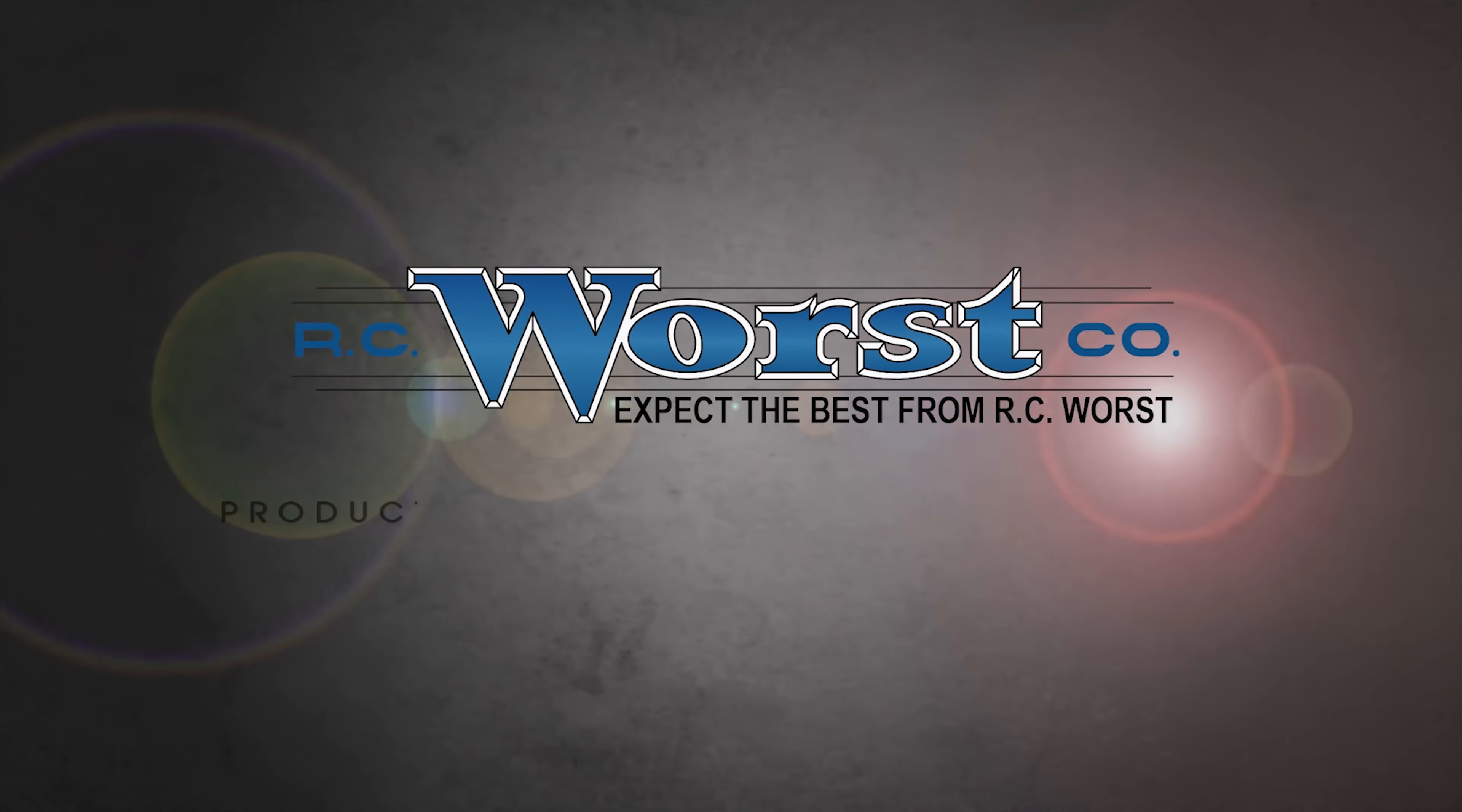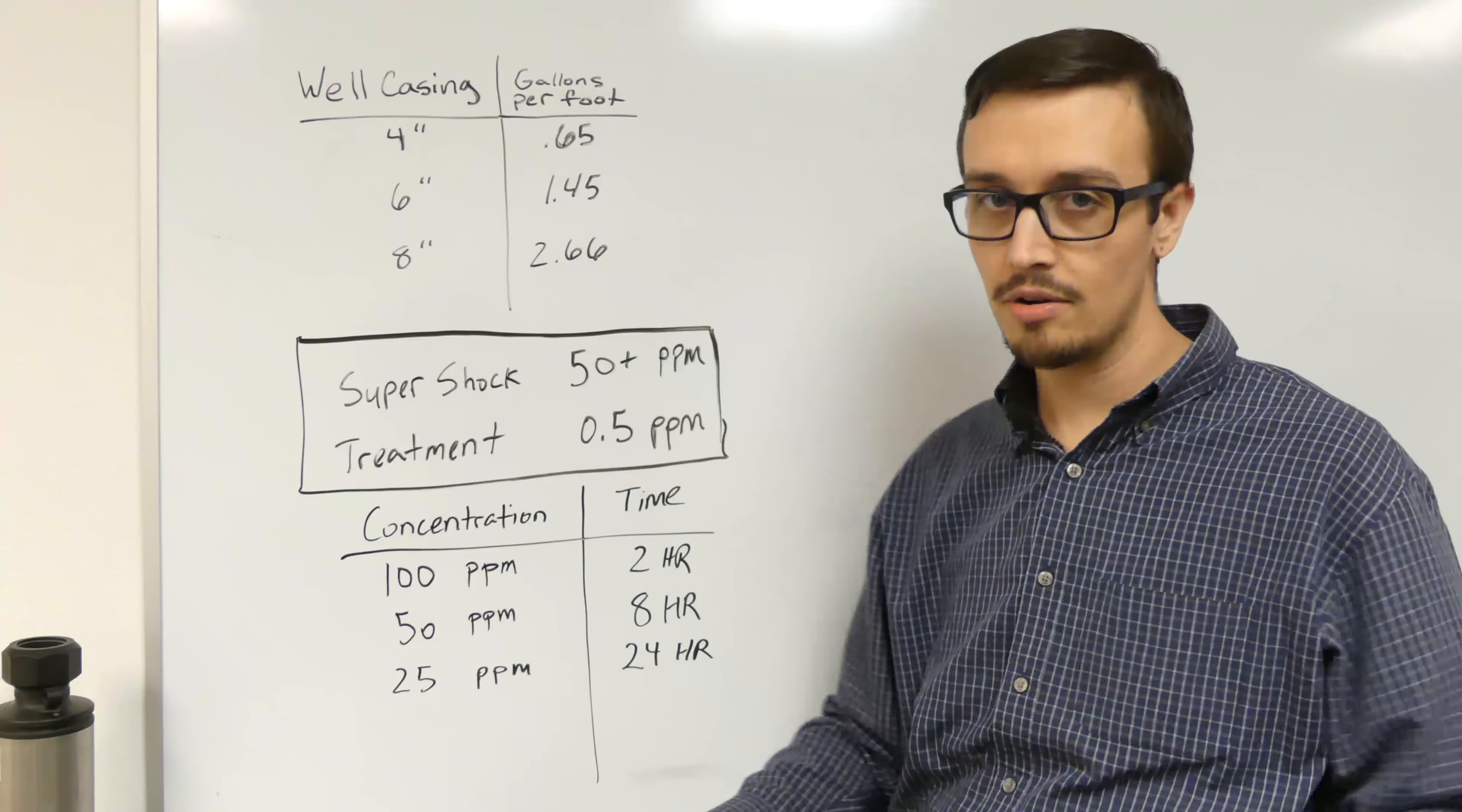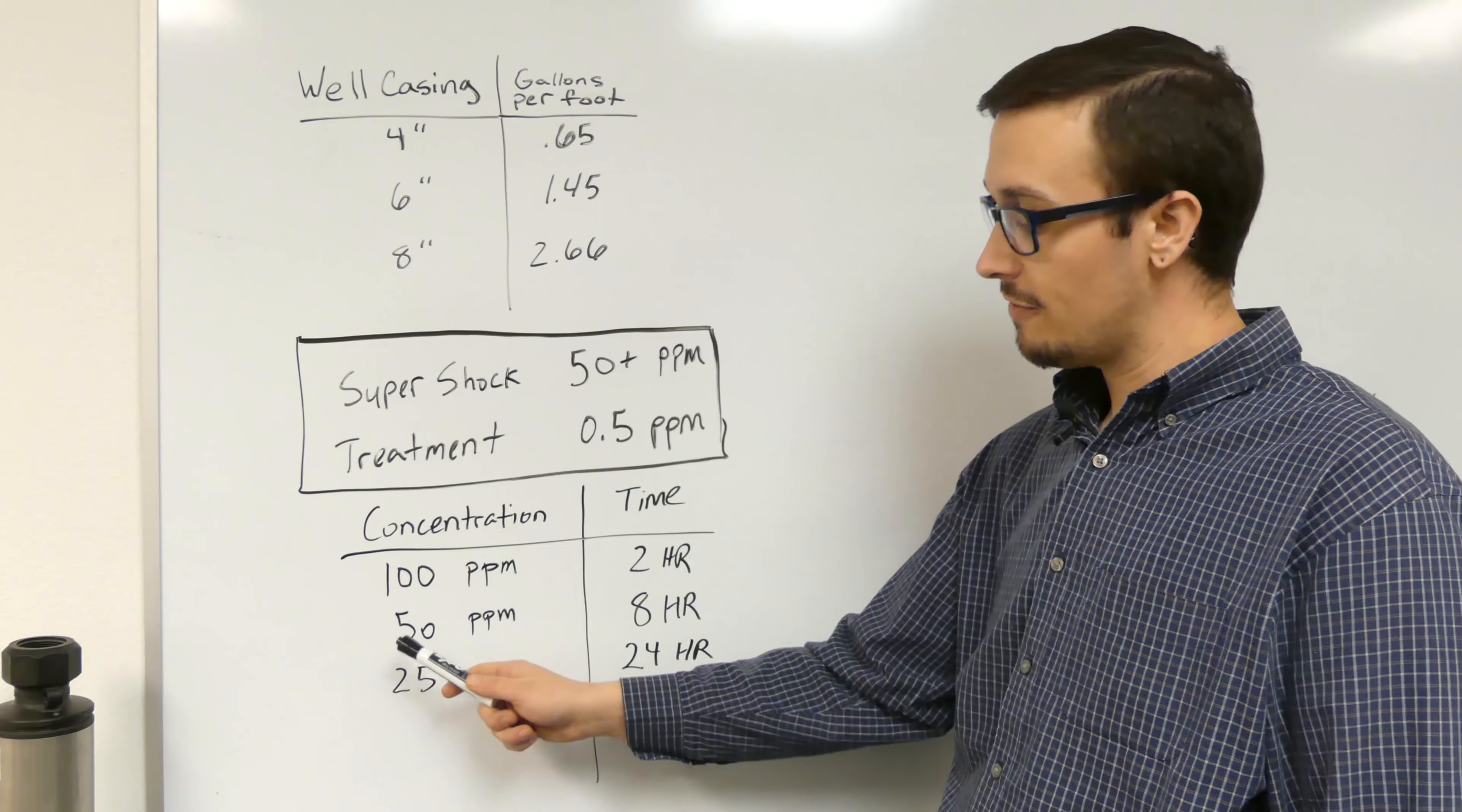A super shock or superchlorination or well shock, I've heard it called all kinds of different names, is typically 50 parts per million or more. It's quite a high concentration. Just to put that into perspective, most treatment like chlorination in the main city water line, the concentration is usually at or below a half a part per million, which is the tolerable drinking level.